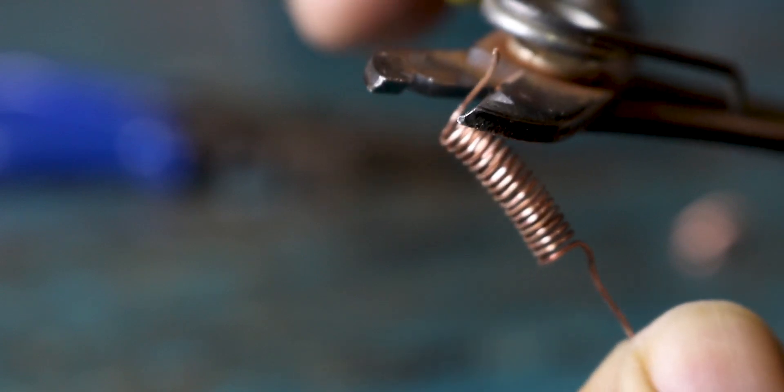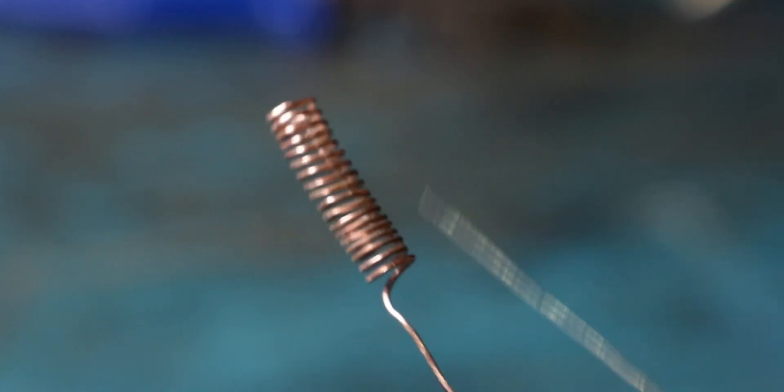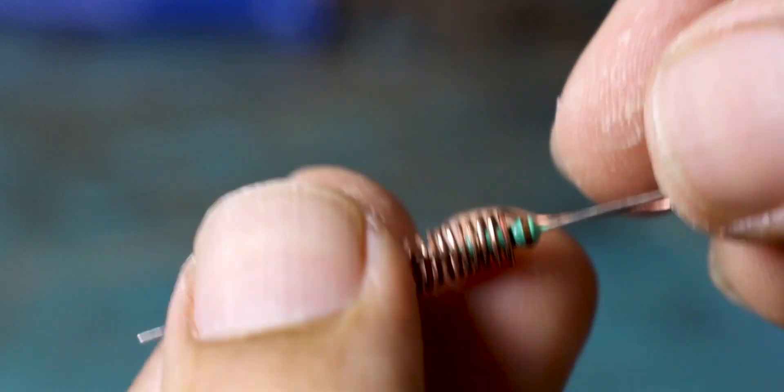After you are done making the spring, you can chop off one end of the spring. And now take the 10kOhm resistor and place it inside the spring just like this. Make sure it doesn't touch the copper spring.